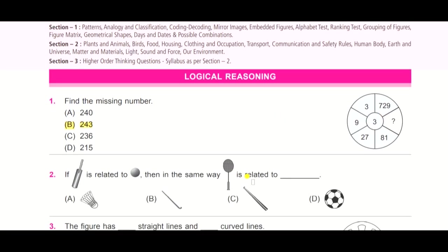Question number two: if bat is related to ball, then in the same way shuttle or racket is related to what? Look at the options here, observe the options carefully, option A, B, C, and D. So what do you think the answer is?